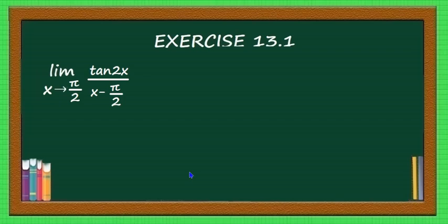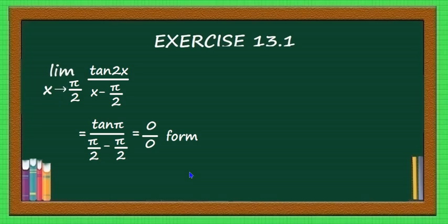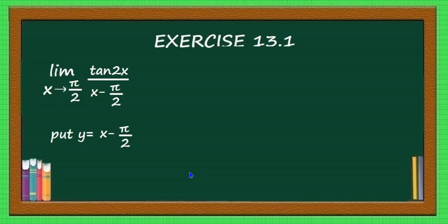Now see this question: limit x tending to π/2 of tan(2x) divided by (x - π/2). If you put x equal to π/2, it becomes tan(π)/(π/2 - π/2). Tan(π) is 0 and π/2 - π/2 is also 0, giving 0/0, which is an indeterminate form. To find the limit, put x - π/2 equal to y, so as x tends to π/2, y tends to 0.